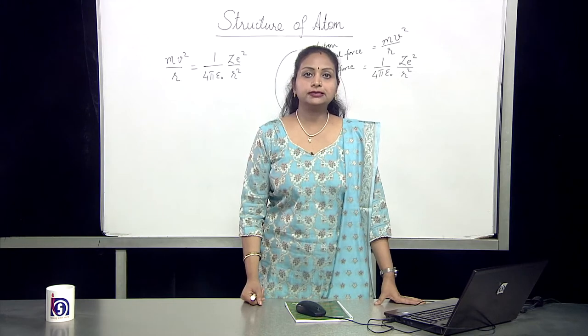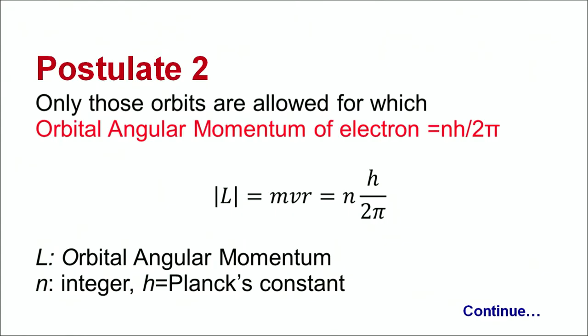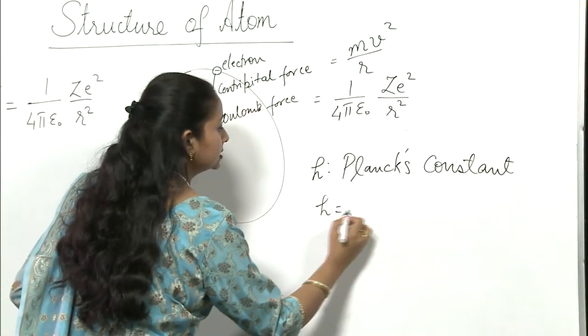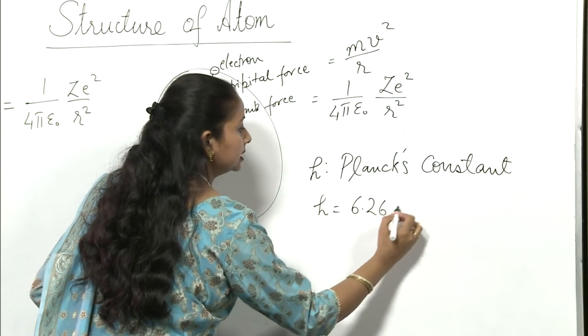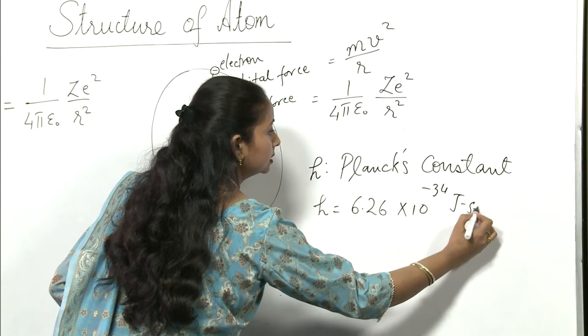The second postulate says that only those orbits are allowed for which the orbital angular momentum of the electron is integral multiple of h/2π. Now what is h? h is Planck's constant whose value is 6.26 × 10^-34 joule second.